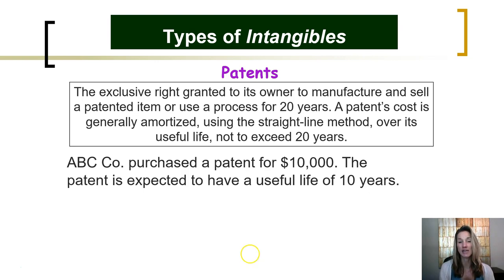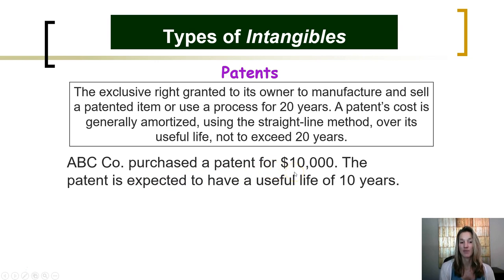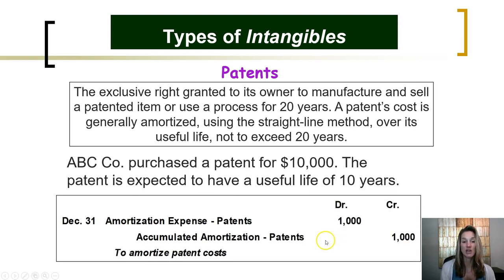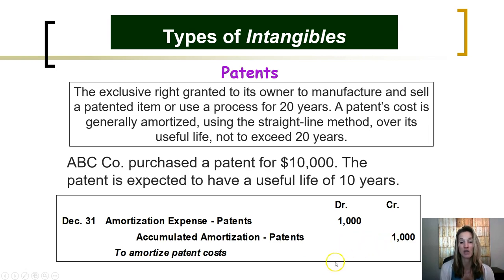Patents are the exclusive right granted to their owner to manufacture and sell a patented item or use a patented process for 20 years. A patent's cost is generally amortized or spread out over the life of the patent using the straight-line method. For example, ABC purchases a patent for $10,000, expected to have a useful life of 10 years. At the end of each year, we debit patent amortization expense for $1,000 — which is $10,000 divided by 10 years — and credit the contra asset account accumulated amortization on patents for $1,000, very similar to the recording of depreciation expense.